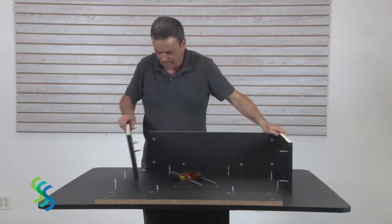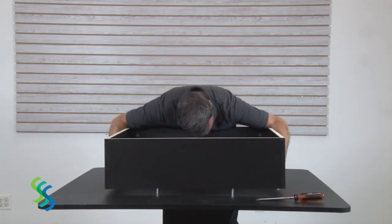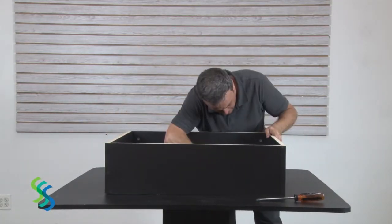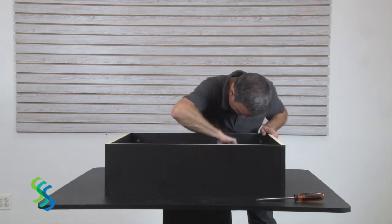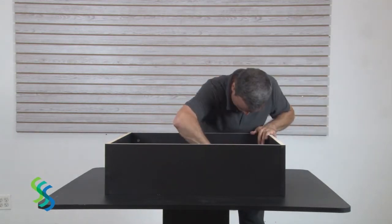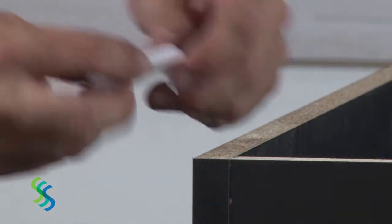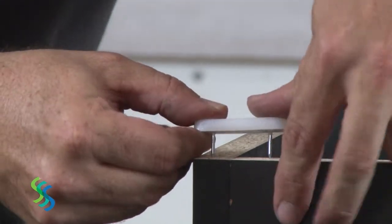Assemble the bottom stand using the same procedure as the top two stands. Lower the bottom stand onto the cam lock screws on the bottom of the lowest tier and secure them to this tier using cam locks.